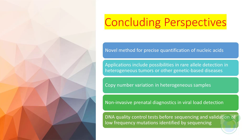To date, digital PCR has proven itself as a novel method for precise quantification of nucleic acids. It uses similar assay reagents as used in standard analog measurements, but counts the total number of individual target molecules in a digital format, enabling many applications that require high sensitivity and have restricted sample availability. Applications where dPCR has been demonstrated or may be well suited include: rare allele detection in heterogeneous tumors or other genetic-based diseases, liquid biopsies of solid tumor burden using peripheral body fluids, non-invasive prenatal diagnostics, viral load detection, gene expression, copy number variation in heterogeneous samples, single-cell gene expression, DNA quality control tests before sequencing, and validation of low-frequency mutations identified by sequencing.